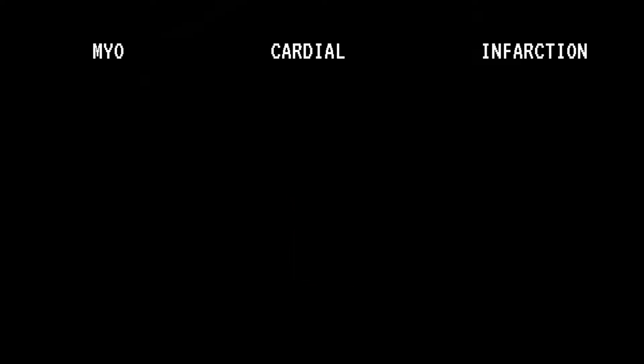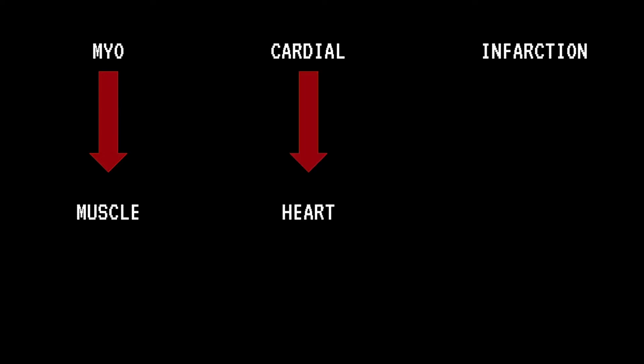Myocardial infarction is also known as heart attack and it can happen due to coronary artery disease. The coronary artery is the artery that supplies the heart itself with blood and oxygen. When a fatty material called plaque begins to build up in this artery, it will eventually cause the coronary artery to burst and rupture. This clot will then start to block blood flow to the myocardium, which is the heart muscle. As a result, this muscle tissue in the heart will begin to die or infarct.